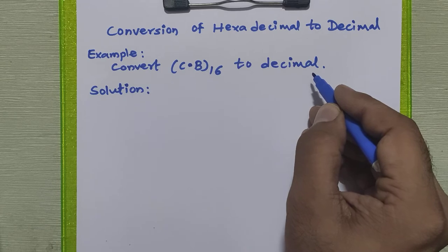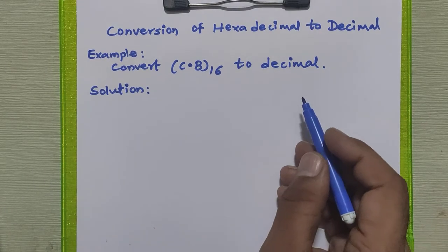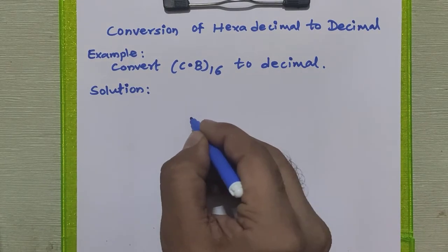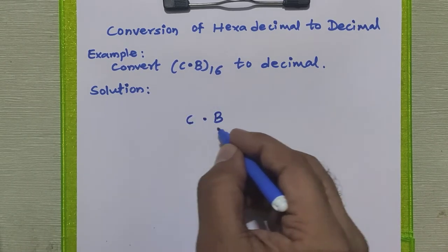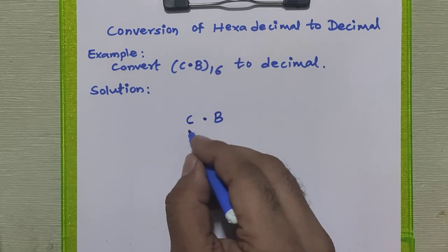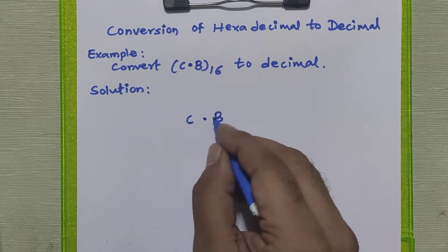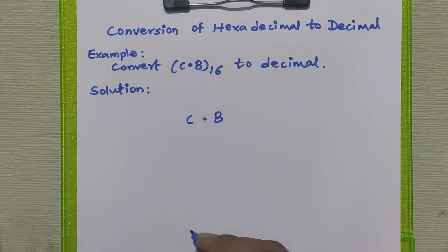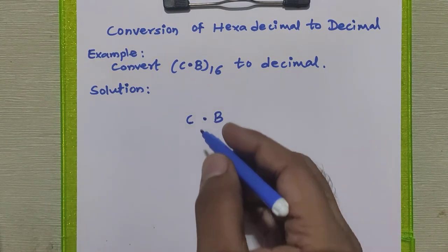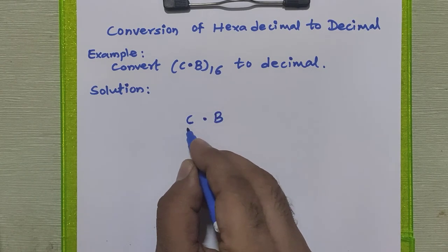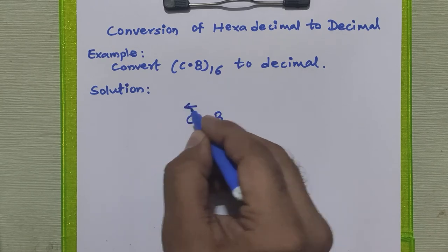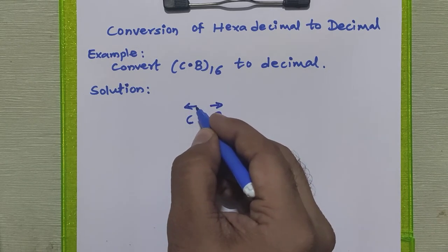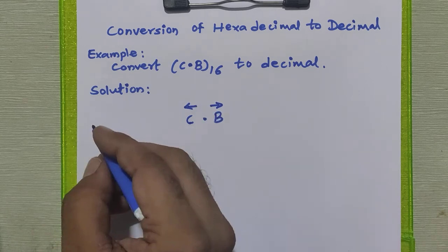To convert any hexadecimal number to decimal, we have to multiply each hexadecimal digit by its positional powers of 16. There are two parts in this example: one is the integral part and another is the fractional part. For the integral part, the powers of 16 are increasing from right to left.